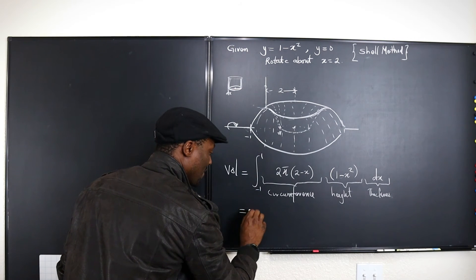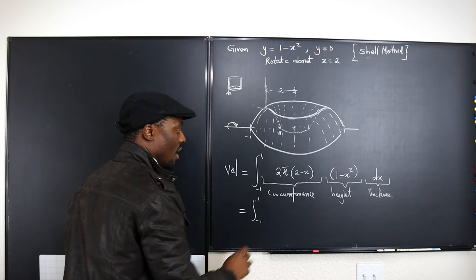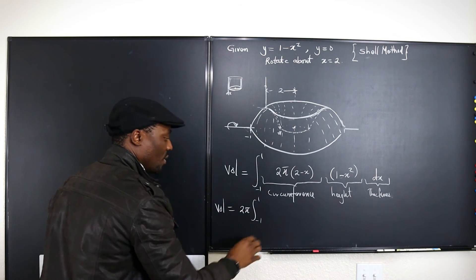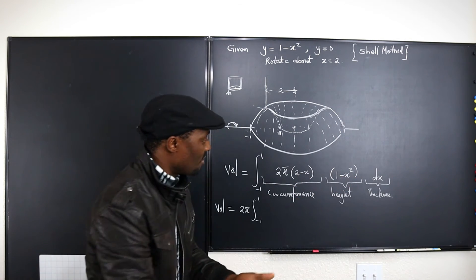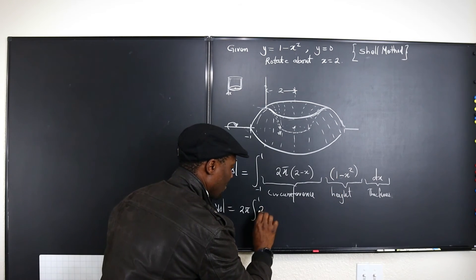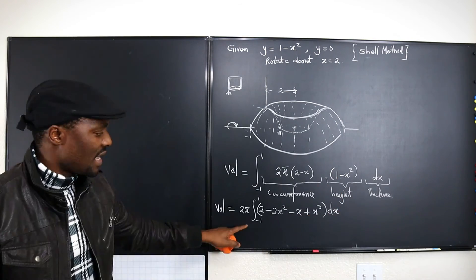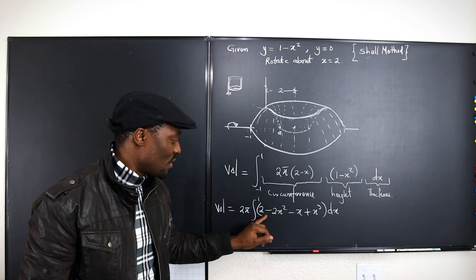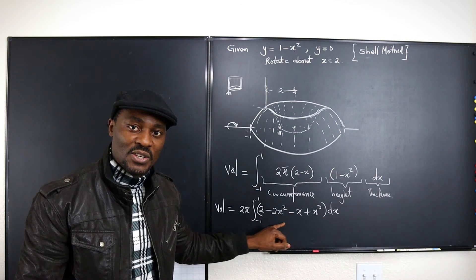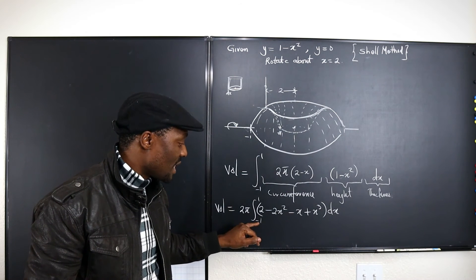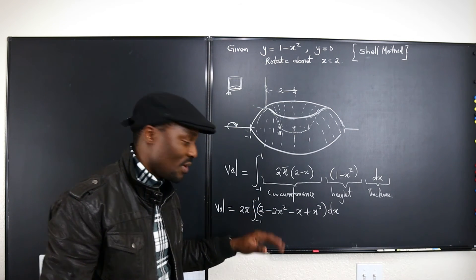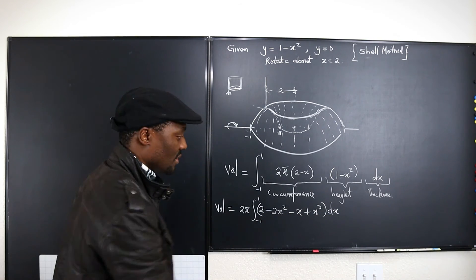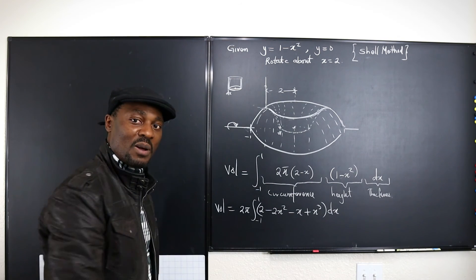So this will be the same thing as the integral from negative 1 to 1 of 2π times (2 minus x) times (1 minus x squared) dx. I can take out 2π. Now, can we change this to 0 to 1? Don't do it if you're not sure the function is an even function. Don't be wrong to change from negative 1 to 1, to 0 to 1 and then double it like we usually do with even functions — this is not an even function because there are problems with both the radius and the height terms.